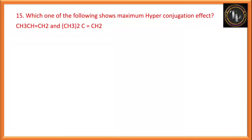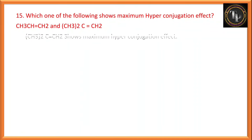Which one of the following shows maximum hyperconjugation effect? The compound with more hyperconjugable hydrogen atoms will show the maximum effect. In the first example, CH3-CH=CH2, the double-bonded carbon has one CH3 group containing three hyperconjugable hydrogen atoms. In the second example, the double-bonded carbon has two CH3 groups, giving six hyperconjugable hydrogen atoms. Therefore the second example has higher hyperconjugation effect.